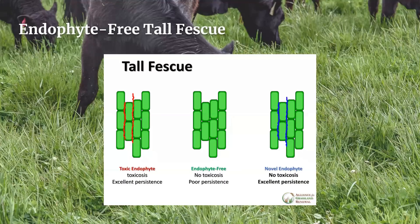Not all tall fescue plants have endophytes. Researchers have removed the endophyte and created new varieties of tall fescue without the endophyte. These endophyte-free varieties do not produce toxic alkaloids and so are safe for animals, but they also lack the benefits of increased pest resistance, stress tolerance, and persistence. In Kentucky and other southeastern U.S. states, we generally don't recommend planting endophyte-free tall fescue varieties.